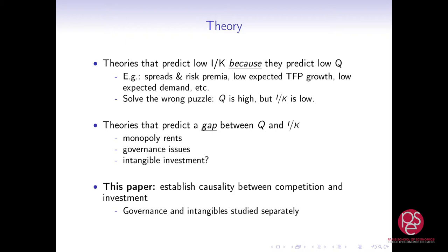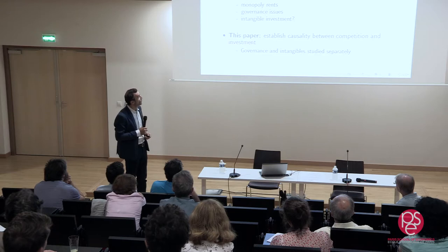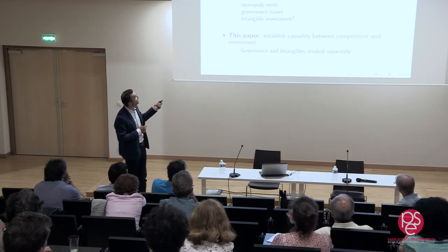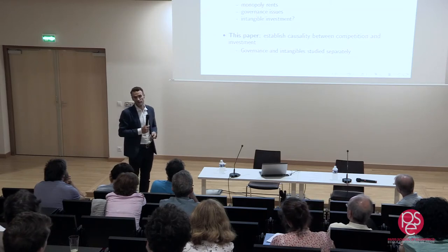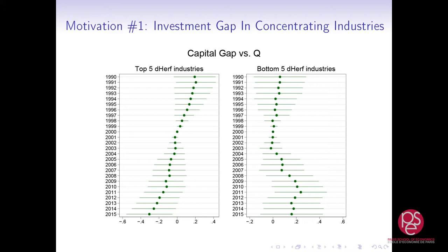So how am I going to do that? First, some more motivating evidence. I'll show you the time series, but there's only so much you can say from that. So we're going to drill into industry data and then firm-level data. Why do I think there's a connection between the decline in investment and a decline in competition? These are industries sorted by what happened to their own Herfindahl index — the top five and bottom five industries by how much their Herfindahl changed.